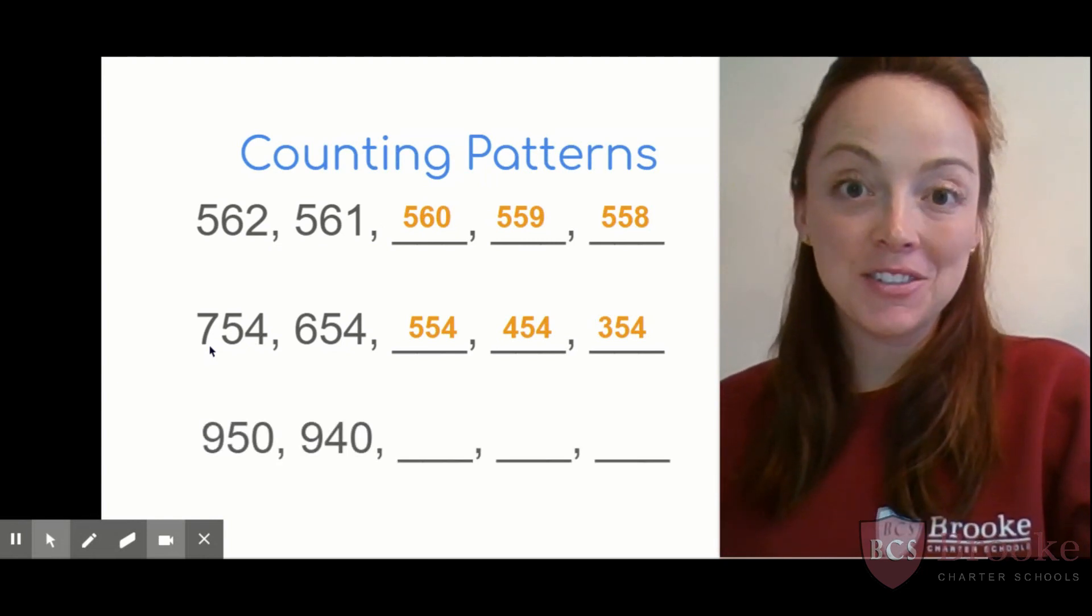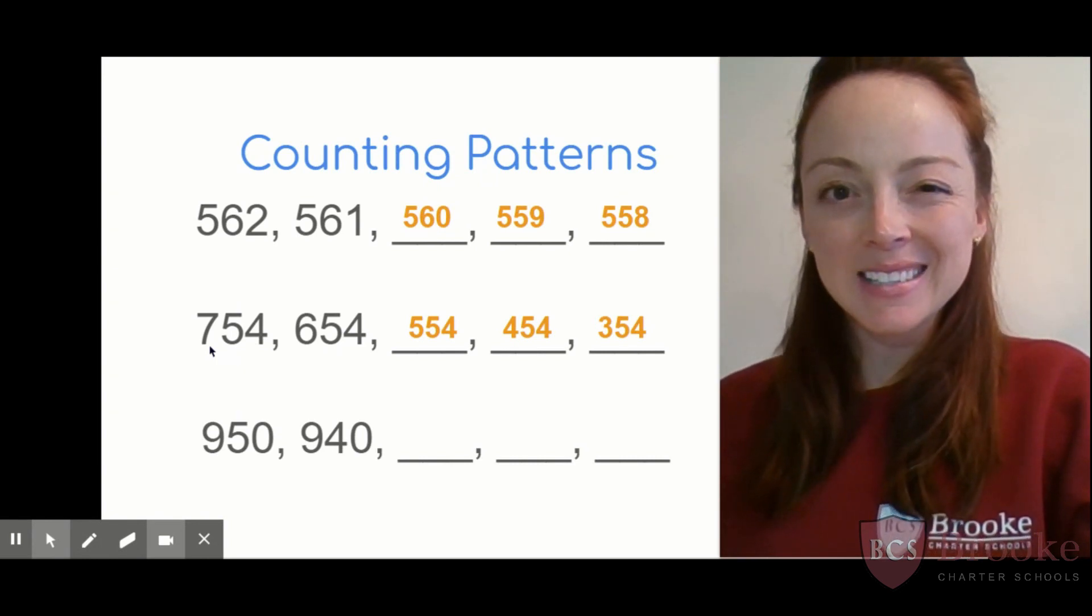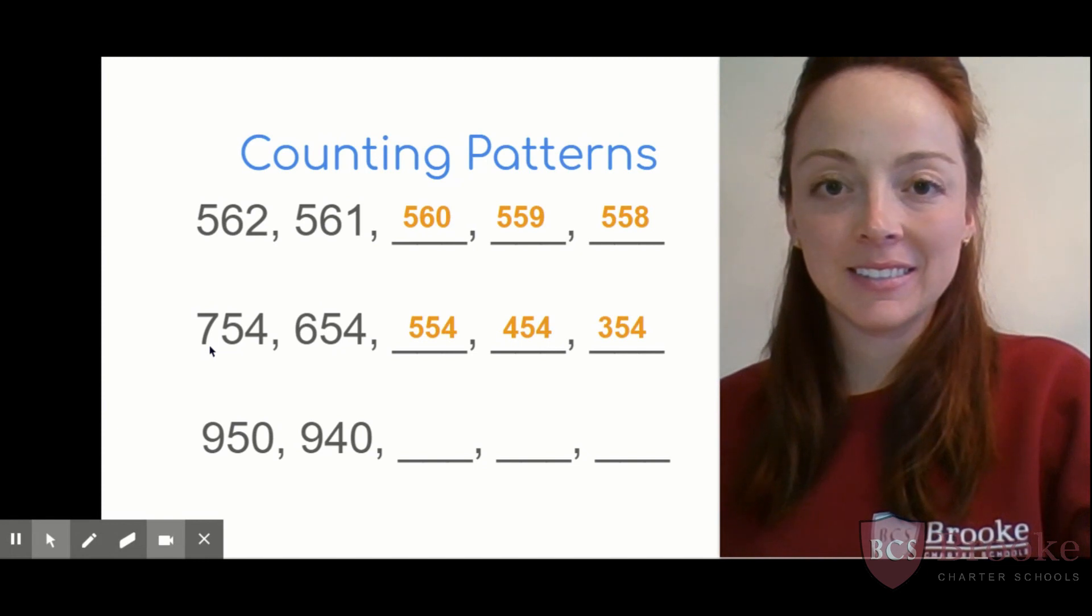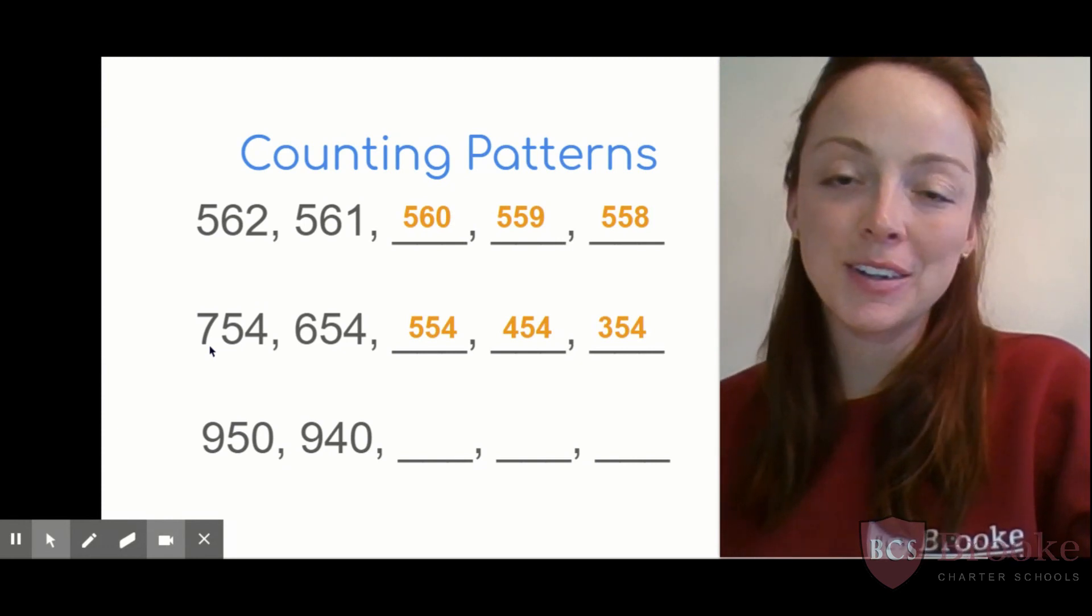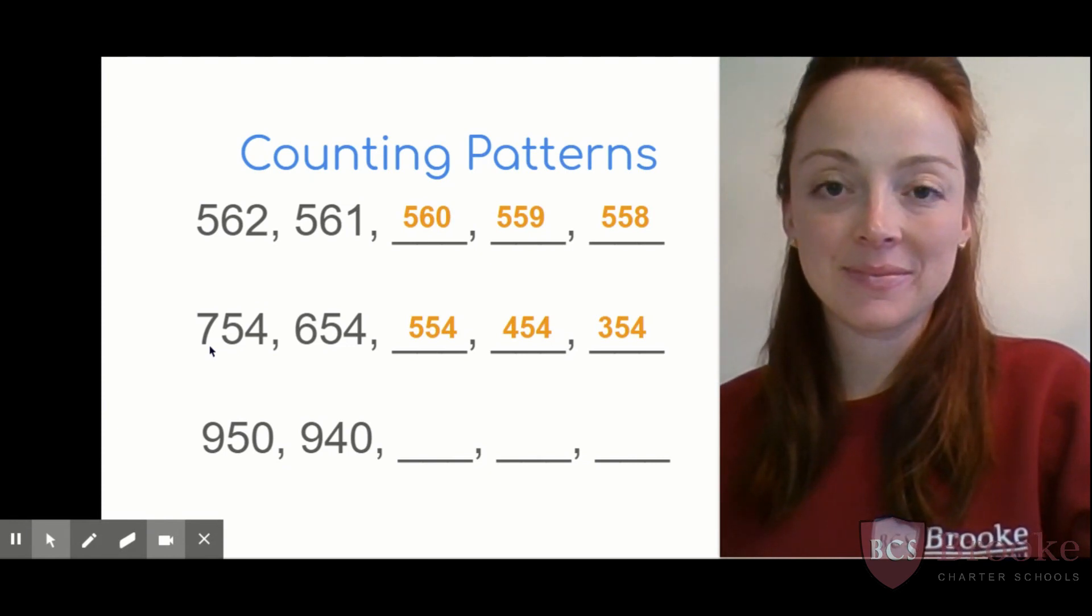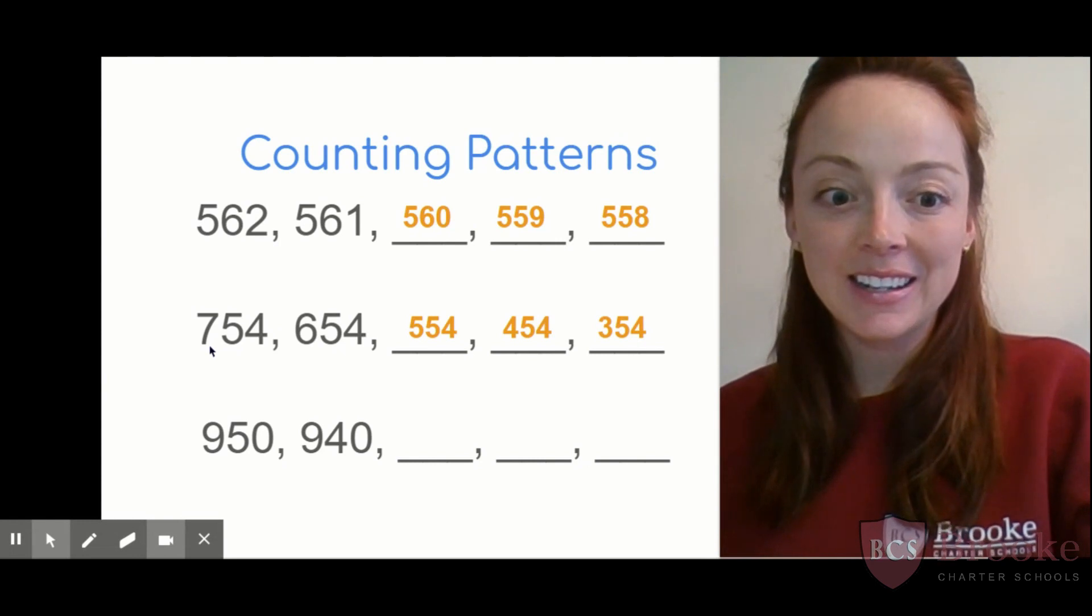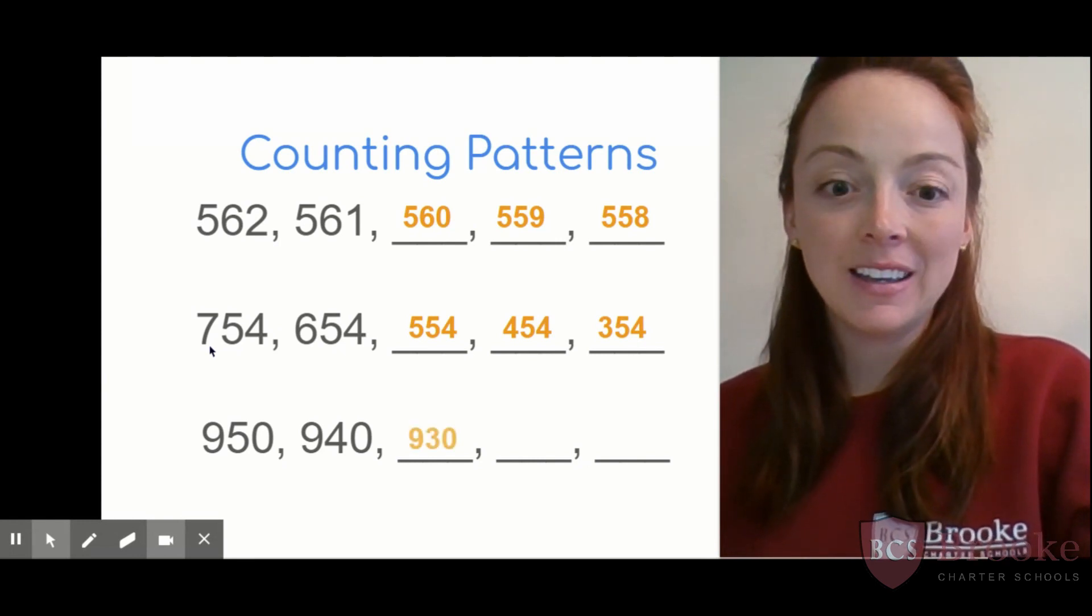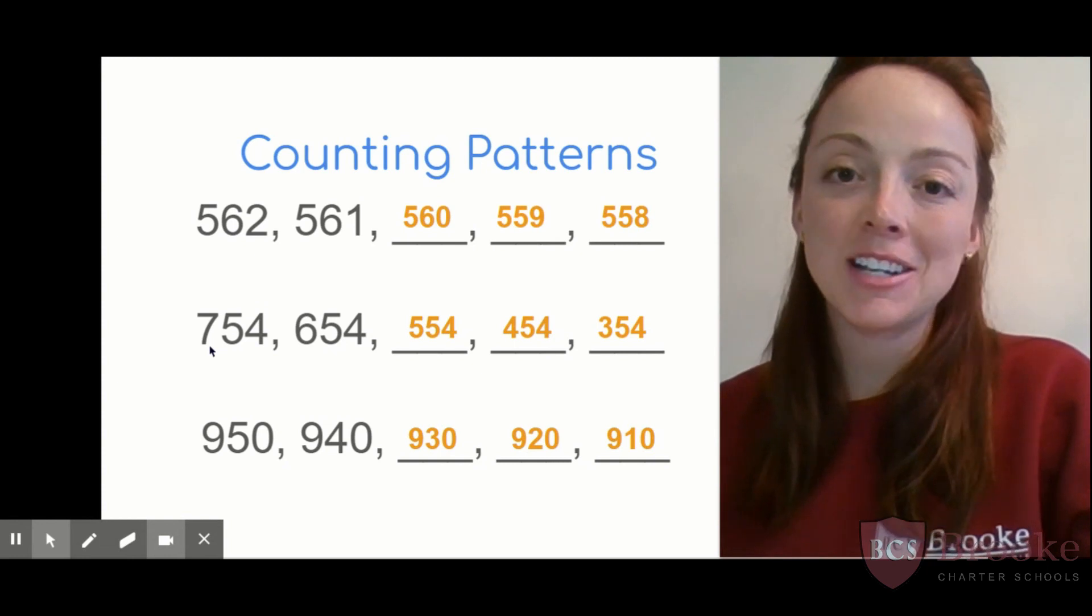One more. 950, 940. What is this counting by? Yeah, and is it up or down? You got it. Fill in the next three numbers. Go. If you said counting down by tens, you're exactly right. 950, 940, 930, 920, and 910. Nice job with your counting patterns, first grade.